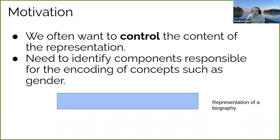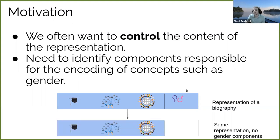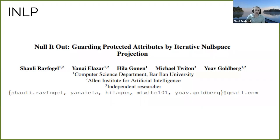This requires the ability to identify components in the representation which encode or are responsible for encoding specific concepts such as gender, race, or any other information we would want to neutralize. At a high level, we may have this rectangle representing the representation from some neural model — for example, for the biography of some person — and it may encode different kinds of information. It may include information about the person's education and previous experience, but also information about their gender. We want to derive from the original representation another representation which is very similar but no longer includes the sensitive information.